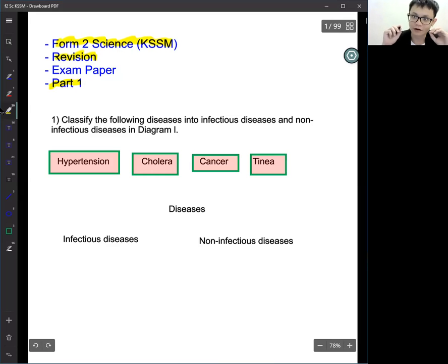Question number one: classify the following diseases into infectious disease and non-infectious. Infection means can infect people like COVID-19, diarrhea, fever, flu. And non-infectious means cannot pass on to people by infection by bacteria, like maybe cancer, diabetes, or high blood pressure. This one is because of food you eat.